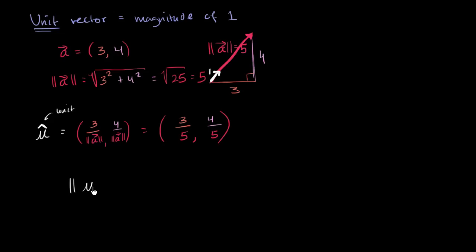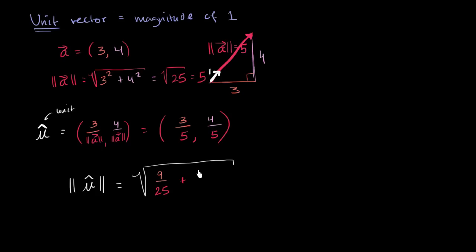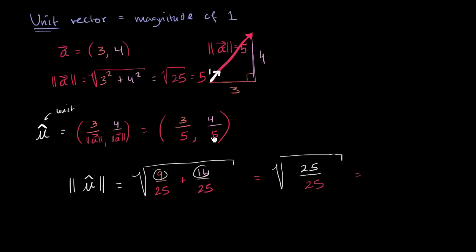Let's verify that. What's the magnitude of unit vector u? It's going to be the square root of the sum of the squares of these two components. The square of 3 fifths is 9 over 25, plus the square of 4 fifths is 16 over 25. Well, 9 plus 16 is 25, so it's the square root of 25 over 25, which is the square root of 1, which is just equal to 1. It goes in the same direction but magnitude is 1 — that's why it's a unit vector.